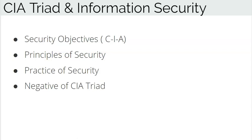The CIA Triad is a theoretical model on which the whole security domain works. When we need to provide or enhance the security of any data, device, or service, we check what changes we can make to its three security objectives: Confidentiality, Integrity, and Availability. Every security control or countermeasure will have an impact on one or more of these objectives, and every attack will also impact one or more of them.